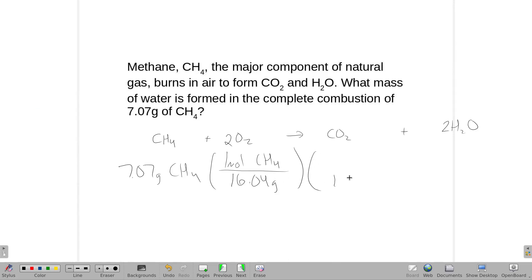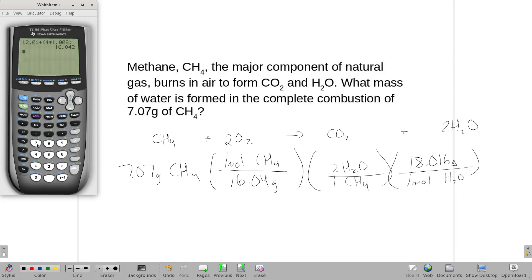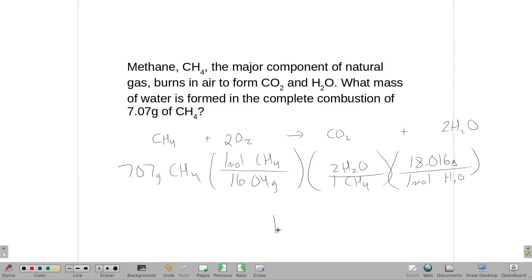And our balanced equation says for every CH4, we would make two waters because that's what we care about. And one mole of water has a molecular weight of 18.016 grams. So we have 7.07 divided by the molecular weight of methane, the 16.04, times 2 divided by 1, times 18.016, and we get that this would be 15.9 grams.